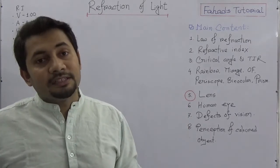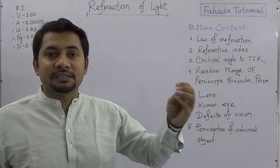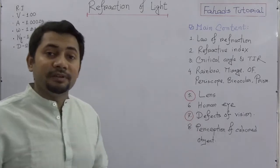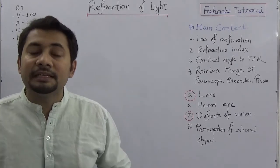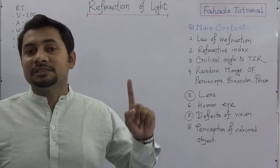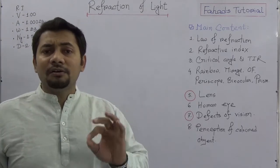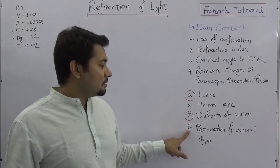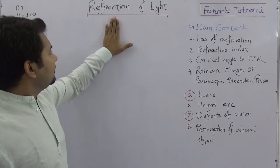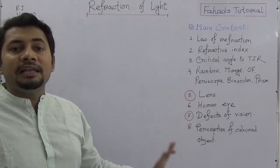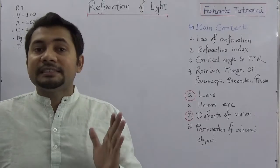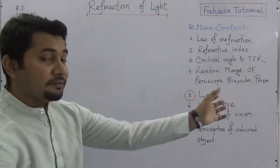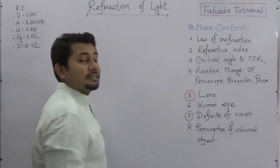Number six, we need to know the structure of human eyes and how we can see, because it's all about light. Then, there are defects of vision — particularly in this chapter, two types are discussed: myopia (short sight) and hypermetropia (long sight). Lastly, we need to know about the perception of colored objects. As I am following a specific academic syllabus, these eight concepts are what I will explain.